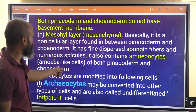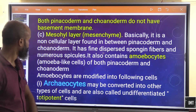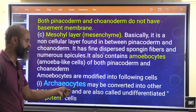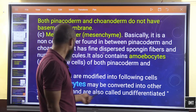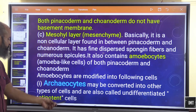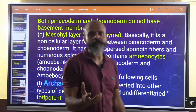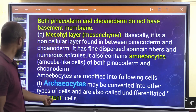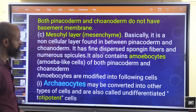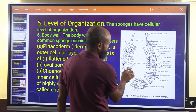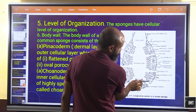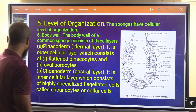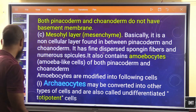Amoebocytes can be modified into the following cell types. First, archaeocytes — these can be converted into other types of cells and are therefore called undifferentiated totipotent cells, meaning they have the potential to become various other cell types.